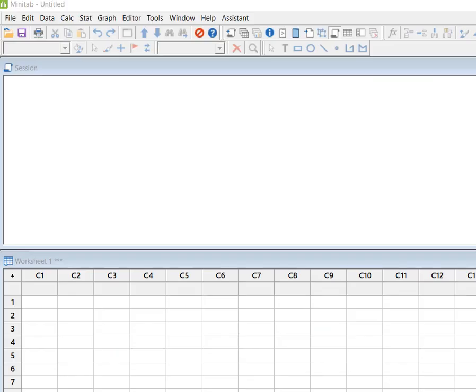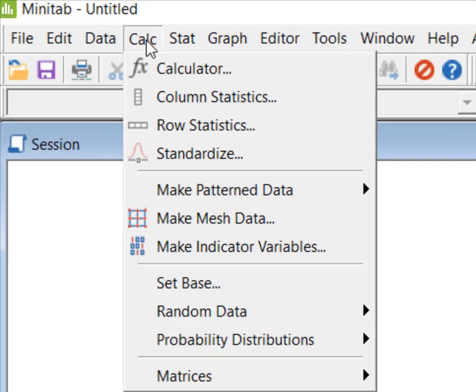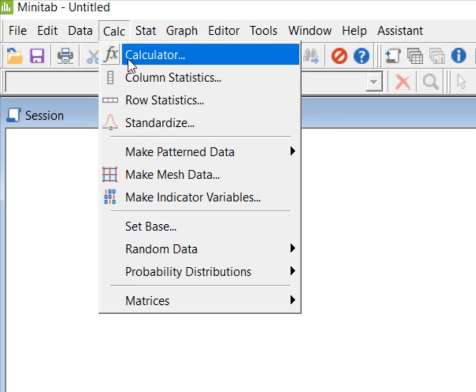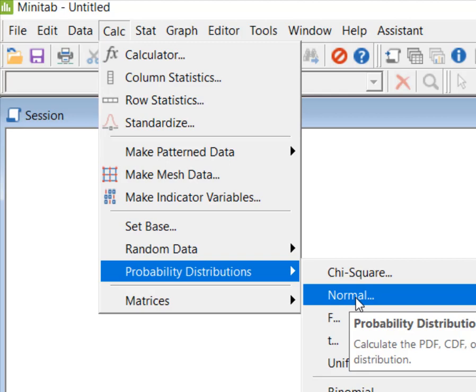Here I am in Minitab and all I've done is opened up a new session. What I'm going to do is come up here and use this calc function. That's where my distributions reside. So I'm going to click on calc and come down here to probability distribution, and over here to normal.